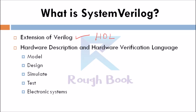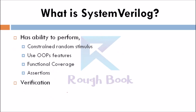System Verilog is a hardware description as well as hardware verification language used to model, design, simulate, test and implement electronic systems. System Verilog has the ability to perform constraint random stimulus, use OOP features in testbench construction, functional coverage, assertion and many others.